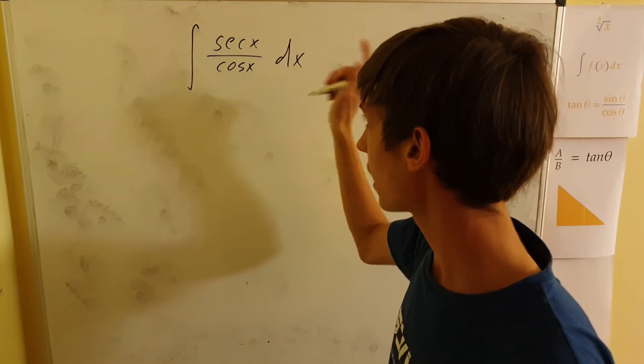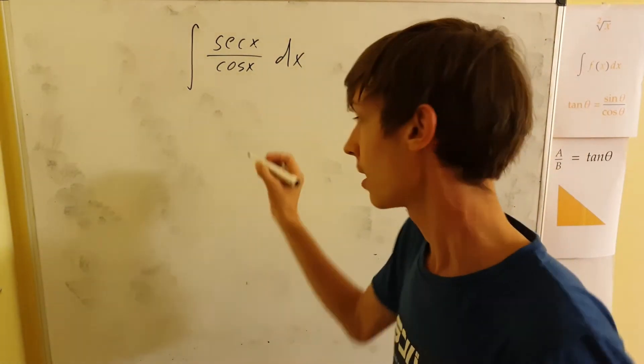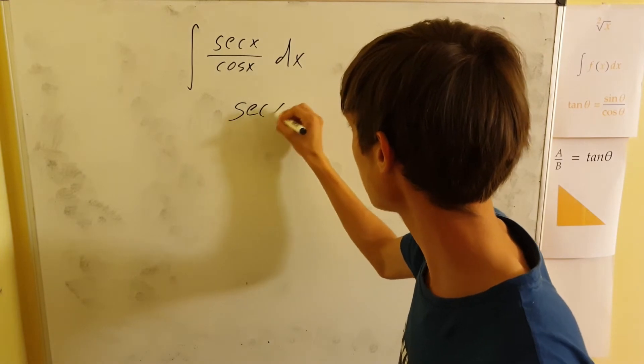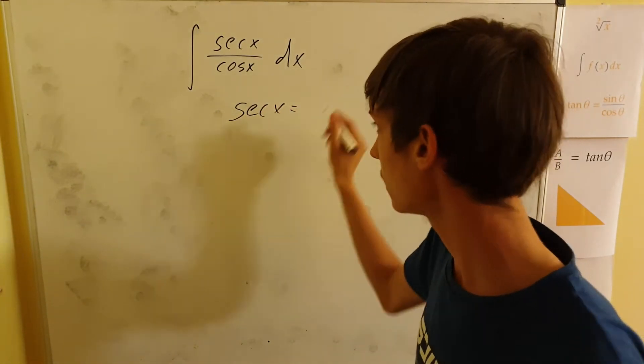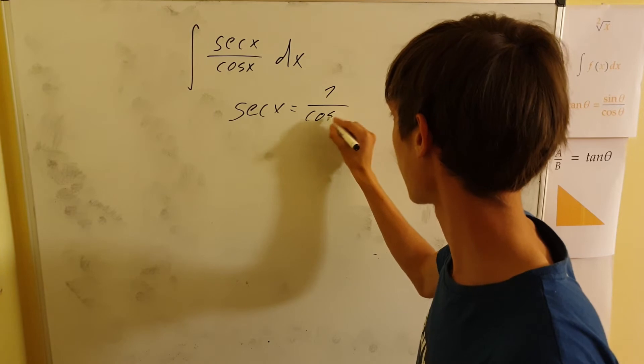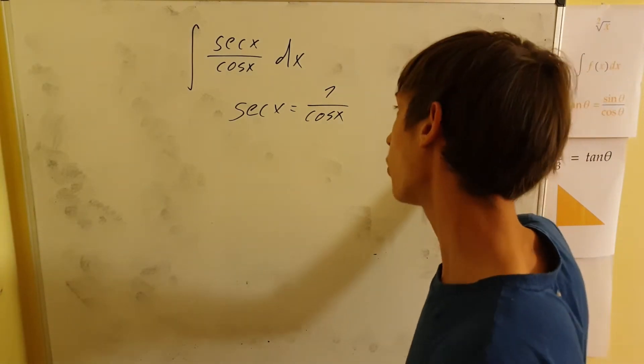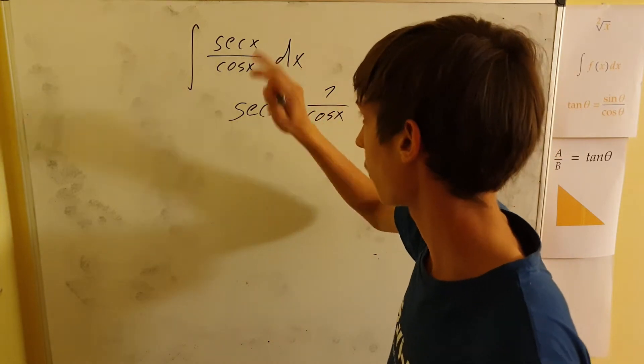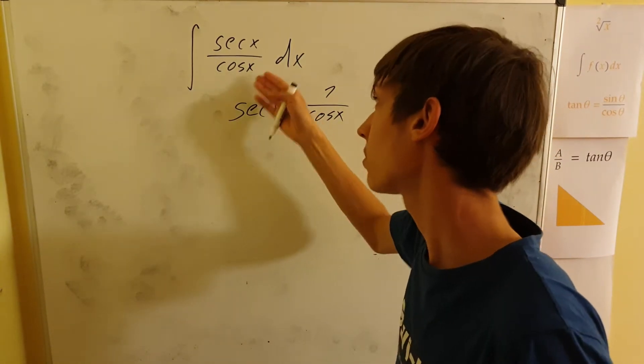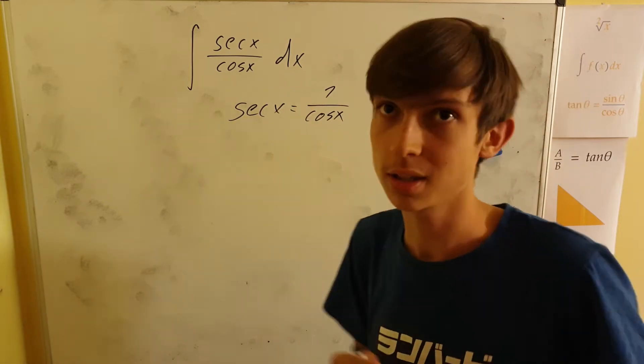We can replace secant x by 1 over cosine x because by definition, secant x equals 1 over cosine x. So we can either replace secant x by 1 over cosine x, or replace cosine x by 1 over secant x.